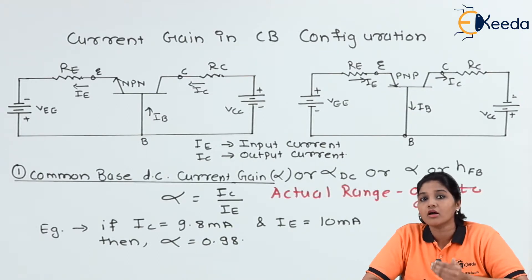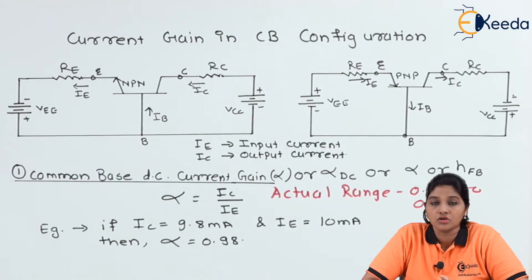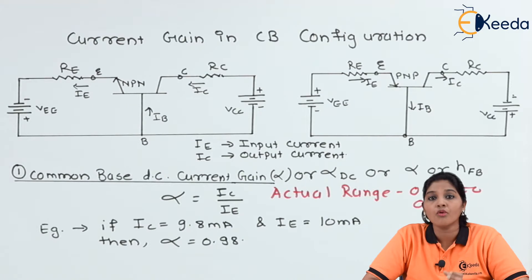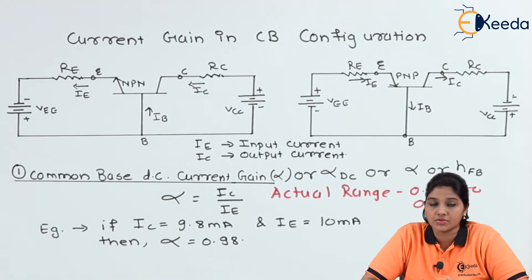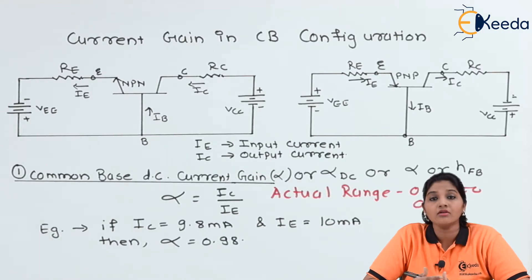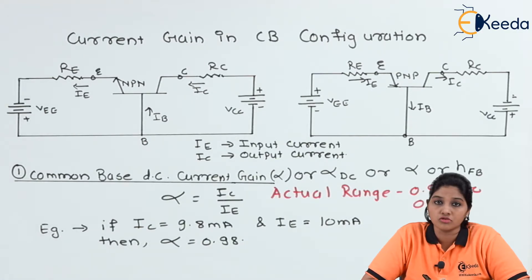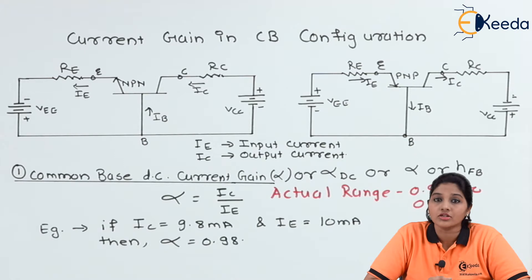If we want to make the value of alpha close to unity, we need to reduce the width of the base region and reduce the doping level of the base region. As the width of the base gets reduced, fewer electrons or holes — in NPN and PNP transistors respectively — recombine when traveling through the base region. The majority of electrons and holes will travel towards the collector region, increasing the collector current to approximately equal the emitter current, making alpha closer to unity. The DC current gain in common base configuration is also called the large signal current gain.